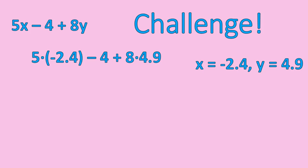Your first step should look like this. 5 times negative 2.4 minus 4 plus 8 times 4.9. When we're solving, we have to make sure that we do the multiplication first before we do any addition or subtraction.